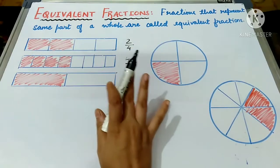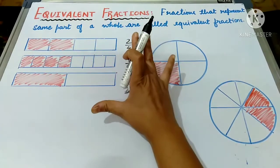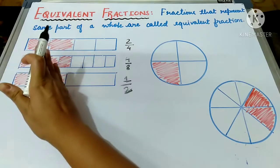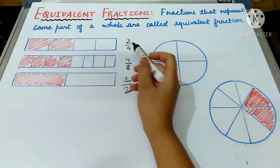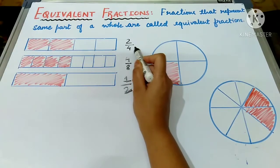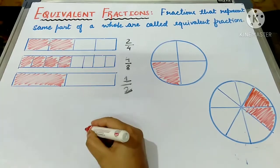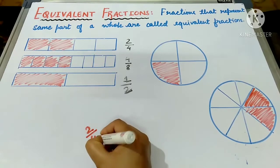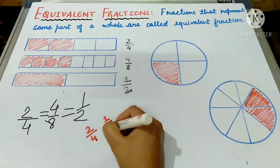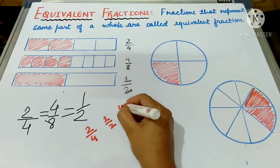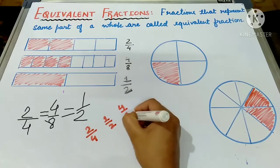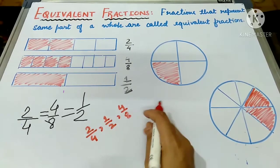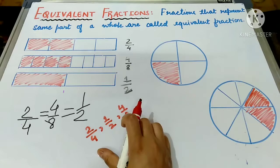This strip is a whole and strip ki equal length hai aur usmein equal part jo hai woh shaded hai. Their fractions alag ho sakte hain. All these fractions — two upon four, one upon two, and four upon eight — are equivalent as they have the same value.